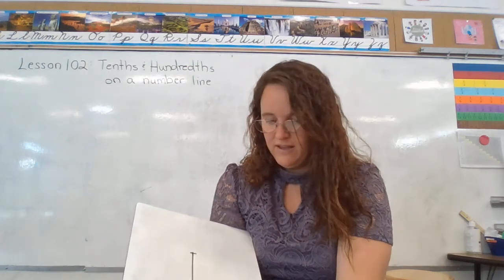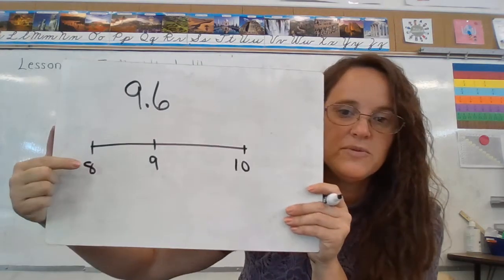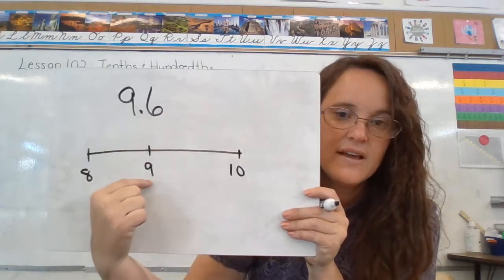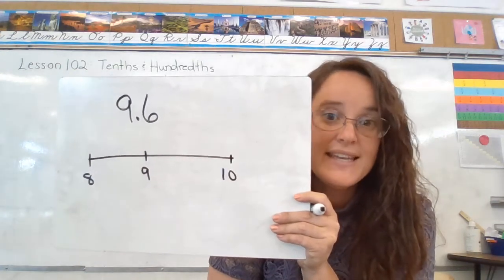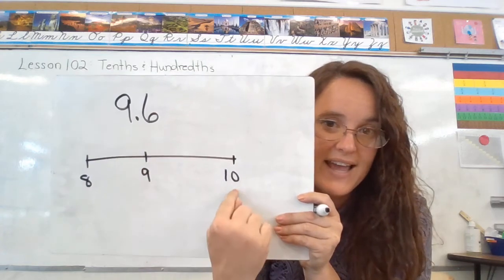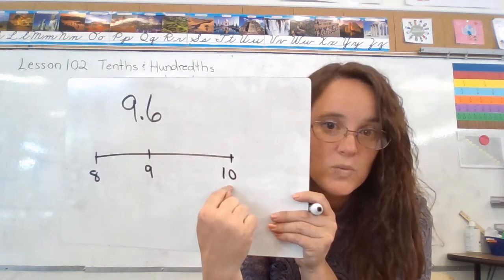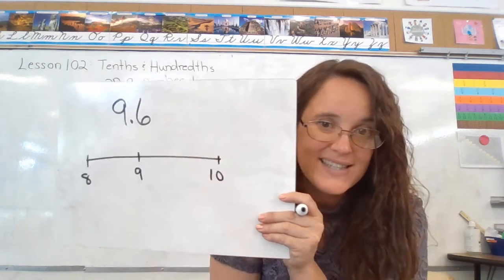is 9 and 6 tenths between the 8 and the 9, or is it between the 9 and the 10? 9 and 6 tenths is going to be between the 9 and the 10. Same rules apply. We look at this digit, it's a 6, it's more than 5.